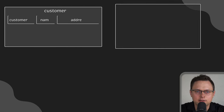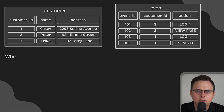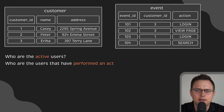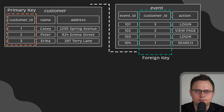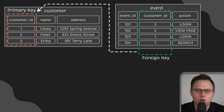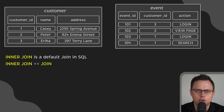Let's go back to the customer and event tables. Each type of join is used to answer a specific business question. For example, what if you want to get only active users — in other words, only users that have performed an action? You would use an inner join. An inner join combines the columns on a common dimension when possible, and only includes data for the rows that share the same values in the common column. The customer ID would be the common dimension. This is the default type of join in SQL — in fact, you don't even need to specify INNER JOIN; writing just JOIN is the inner join.